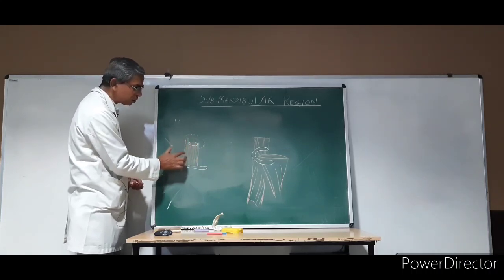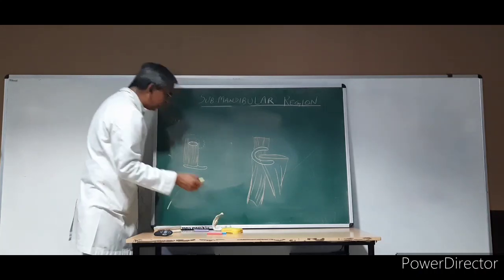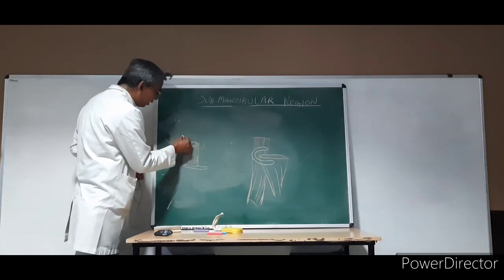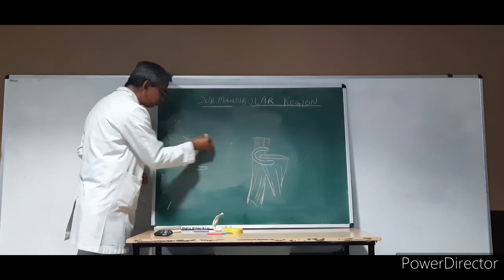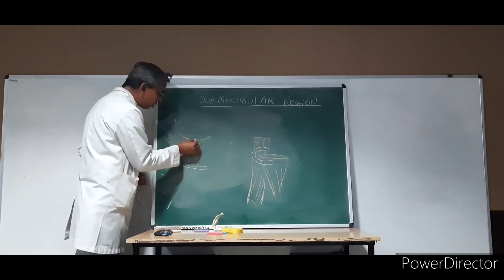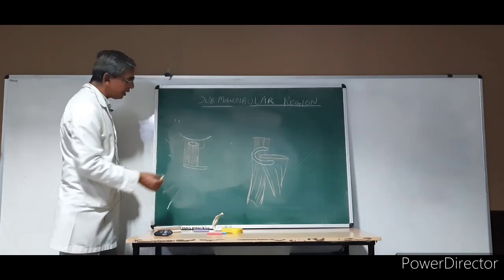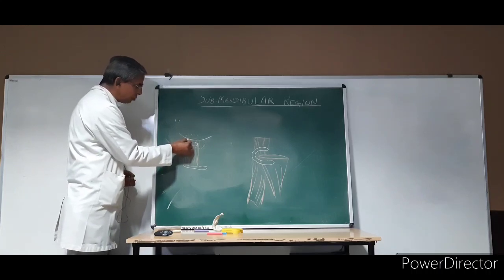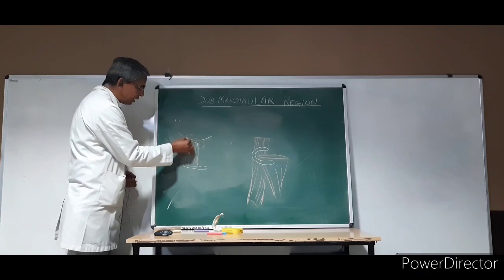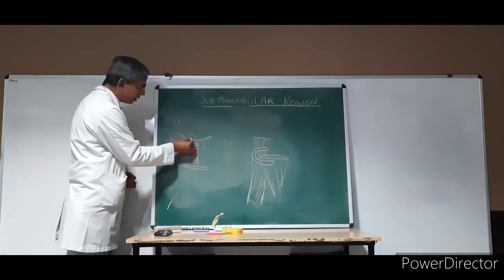This is the hyoglossus muscle. Superiorly, it is related to the lingual nerve here — the lingual nerve passes like this, over the deep part. And here it gives the ganglia, the submandibular ganglia. So this is the submandibular ganglia and the lingual nerve.